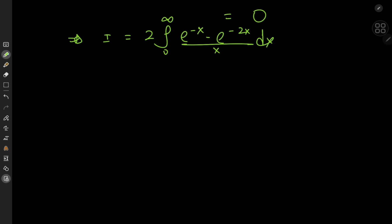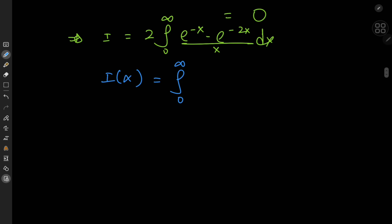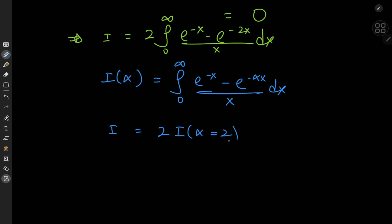For that, we need to define an integral function I of some parameter alpha. I'll define it as the integral from 0 to infinity of (e to the negative x minus e to the negative alpha x) divided by x dx. So the target integral i equals twice the integral function evaluated at alpha equal to 2.